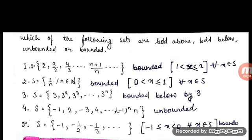Today we are going to see some examples related to sets. Which of the following sets are bounded above, bounded below, unbounded, or bounded? We have to categorize the given examples on whether they are bounded, unbounded, bounded above, or bounded below. Let us start.